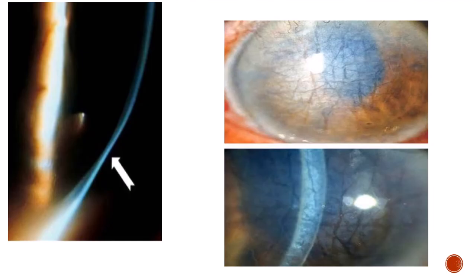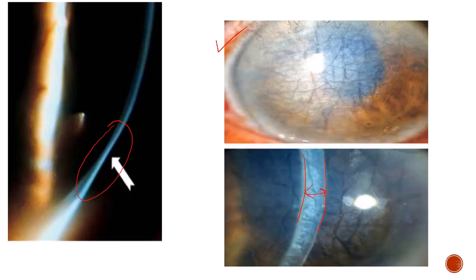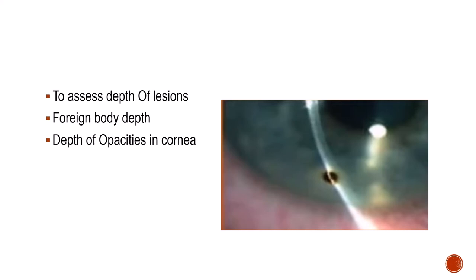You can study thinning and thickening of the cornea in the optical section. In this first picture you can see an area of thinning — this is a case of pellucid marginal degeneration with inferior corneal thinning. In this diffuse illumination picture you can see striae and haziness — a case of striate keratopathy with corneal edema, where the corneal thickness is clearly increased. The optical section is also used to assess the depth of lesions, foreign bodies, and various opacities in the cornea.